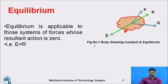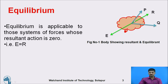Let's discuss the concept of equilibrium. Focus on this particular figure — a body showing resultant and equilibrium. Two forces are present on this particular body: force P and force Q. To calculate the resultant of this particular force system, you use the law of parallelogram. There are different methods — either you calculate analytically, graphically, or mathematically using the formula to identify the resultant.